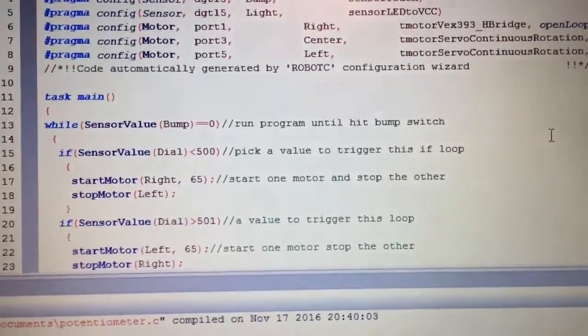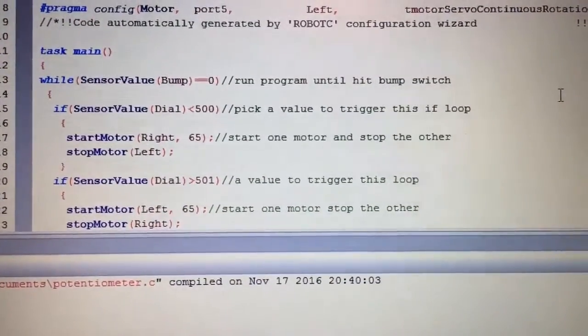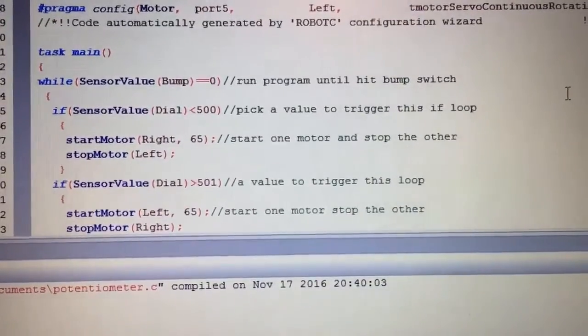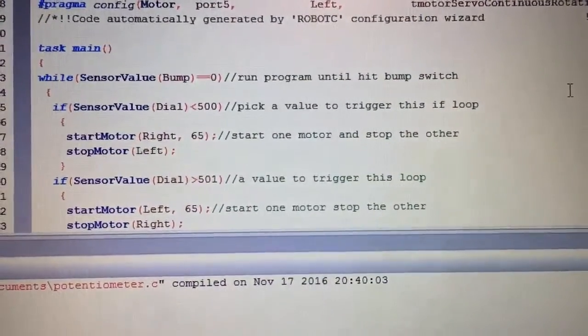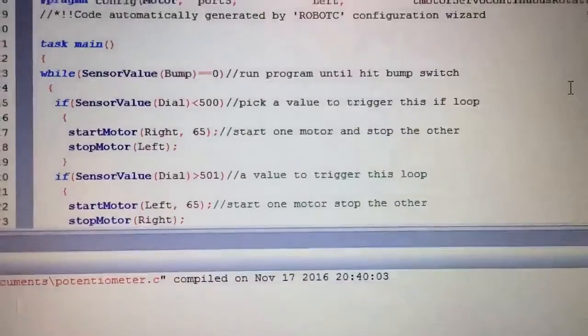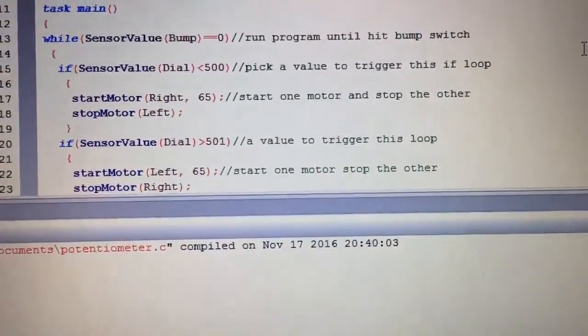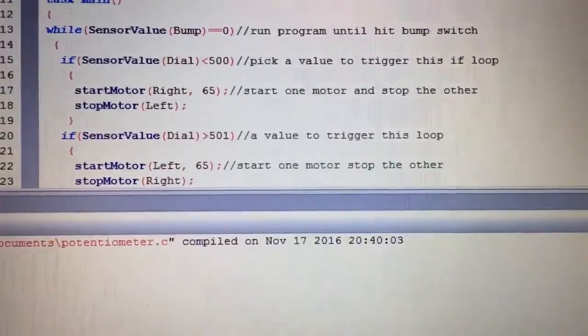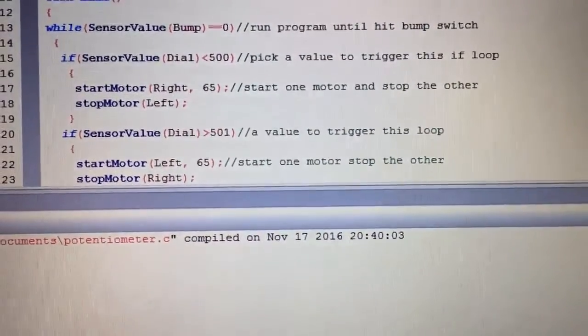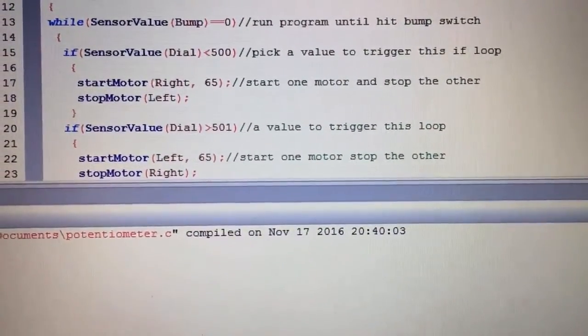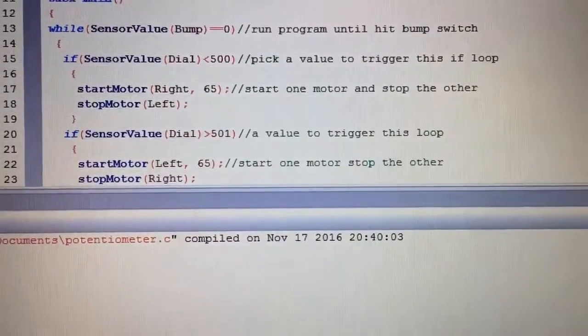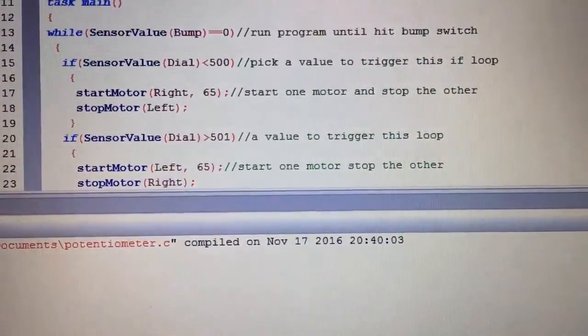If the sensor value for the dial is less than 500, start the right motor and stop the left motor. If the value goes over 501, start the left motor and stop the right. So technically, would they ever both be running? Less than 500, greater than 501, that kind of thing. Certain values run the right motor, other values greater than or less than.